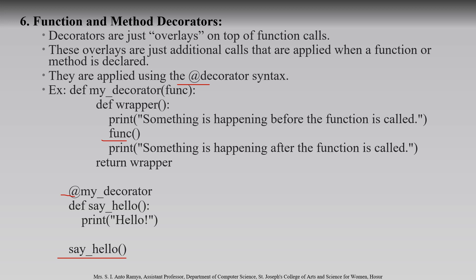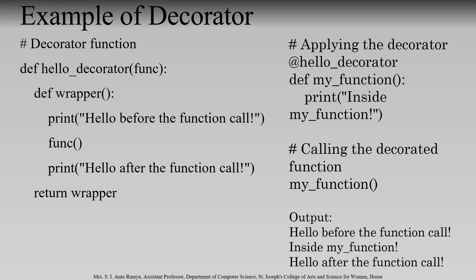Here is another decorator example. 'def hello_decorator(function)' takes one parameter called 'function'. Inside it we define 'wrapper': print 'hello before the function call', then call the function, then print 'hello after the function call', and return 'wrapper'. We apply the decorator: '@hello_decorator' on top of 'def my_function(): print("inside my function")'. When we call 'my_function()', it goes to 'hello_decorator'. It prints 'hello before function call', then calls the original function printing 'inside my function', then comes back and prints 'hello after function call', then returns wrapper and stops.